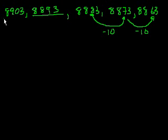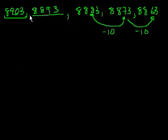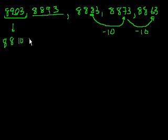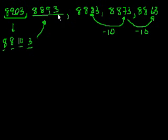This is interesting: when we subtract 10 from 8,903, we have nothing in the tens place. So we take one of the hundreds — leaving 800 — and exchange it for 10 tens. Then we take one of those tens away. So this is the same as 8,800 plus 10 tens plus 3, and when we decrease the tens by 1 we get 8,893.